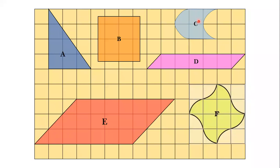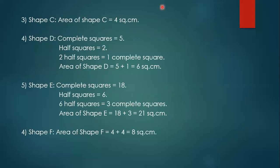Now shape C. How many complete squares are there? 1, 2. Now you see here most part of the square is covered — a very less portion is left — but there is an extension outside the line. If we take this portion and join it here, it will make a complete square. Same way on the top also: less part is left, and if we join the colored portion it will also form a complete square. So 2 complete squares plus 2 more by joining gives area of shape C = 2 + 2 = 4 square centimeters.